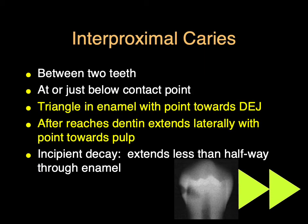Interproximal caries means decay between two teeth, typically right at the contact or just below the contact point, because that is a high-risk area for plaque accumulation and food particles if somebody's not brushing or flossing regularly. This is shaped and described as a triangle in the enamel that points towards the dentin and towards the dental enamel junction. Once the decay reaches the dentin, it extends laterally along that softer dentin substructure with a point towards the pulp.